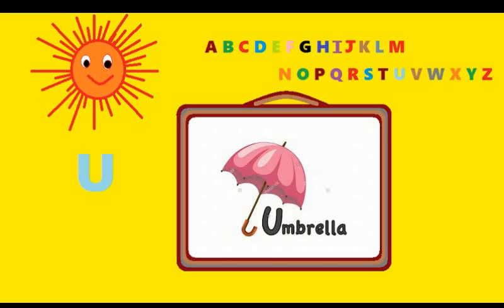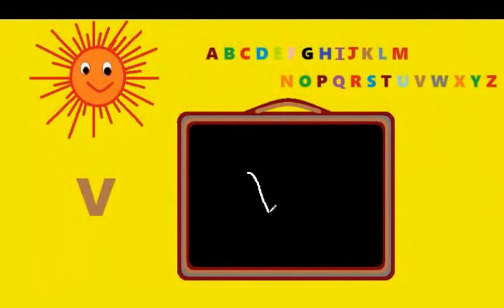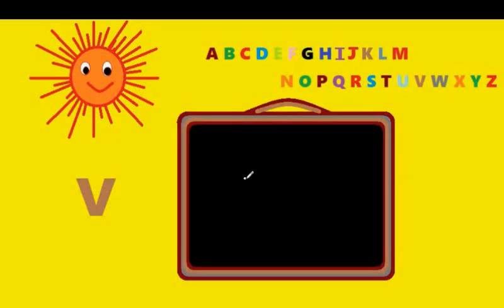Next letter is V. Down the mountain, down the mountain. You have to draw a line from left to right and right to left. That's V. V is for van.